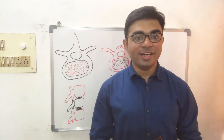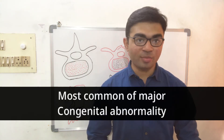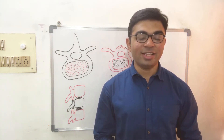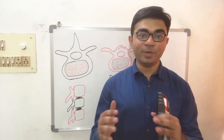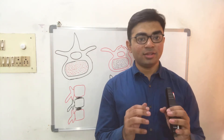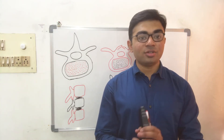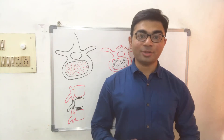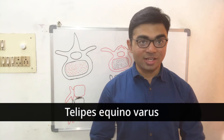Spina bifida is the most common of the major congenital abnormalities. When this occurs, there is a developmental defect in the vertebral column resulting in incomplete fusion of the vertebral arch. This occurs early in embryonic life and may be associated with other deformities such as talipes equinovarus.